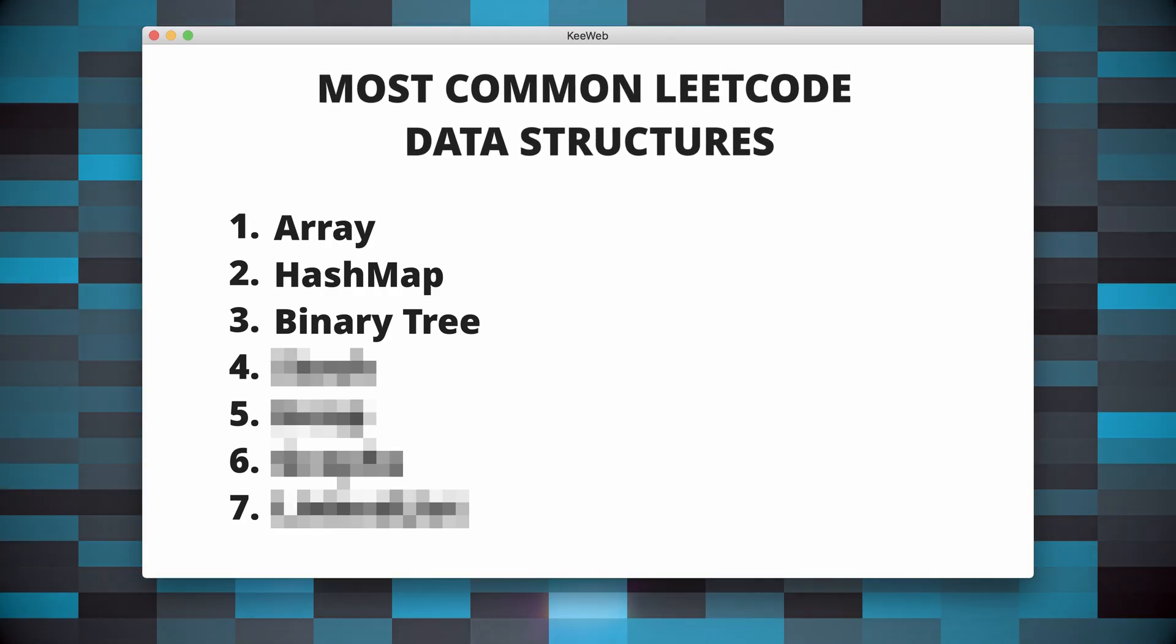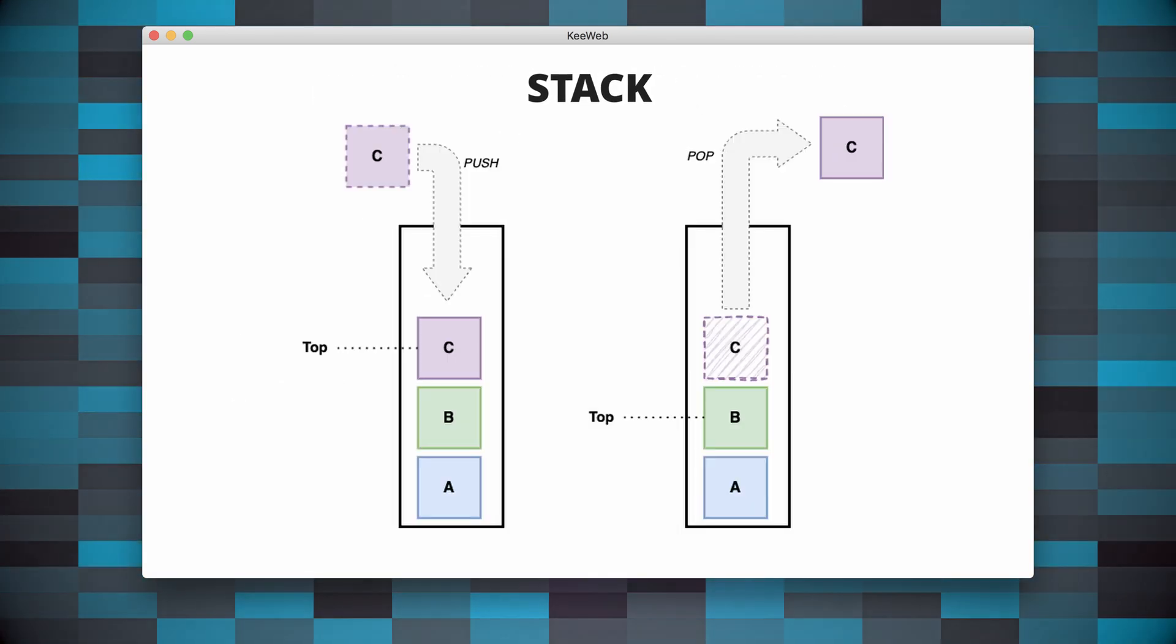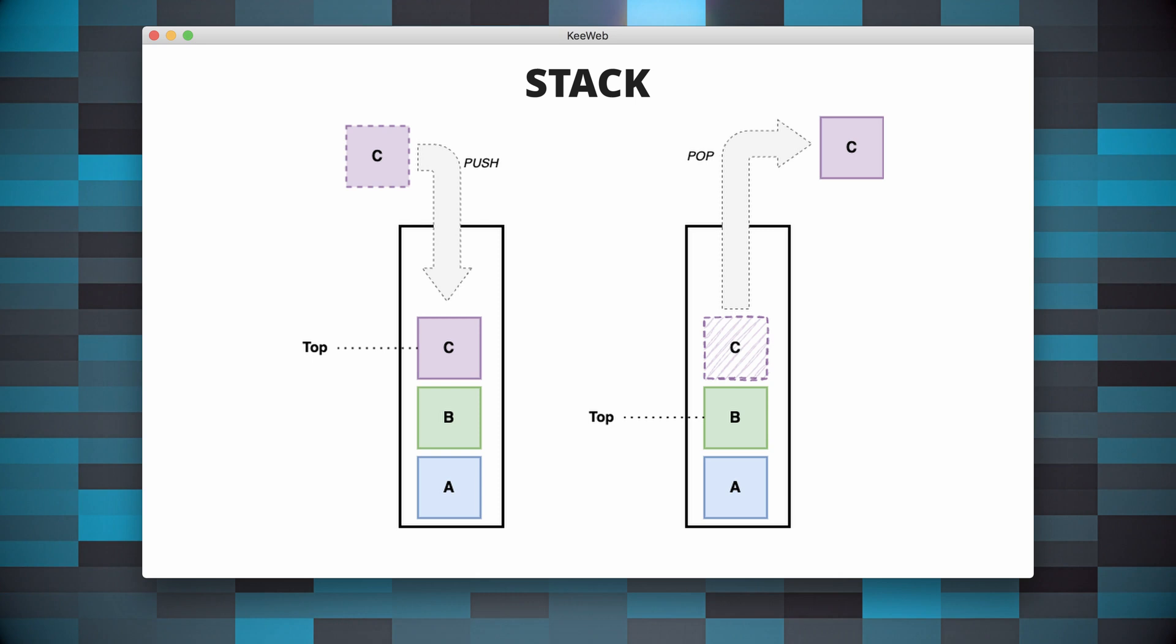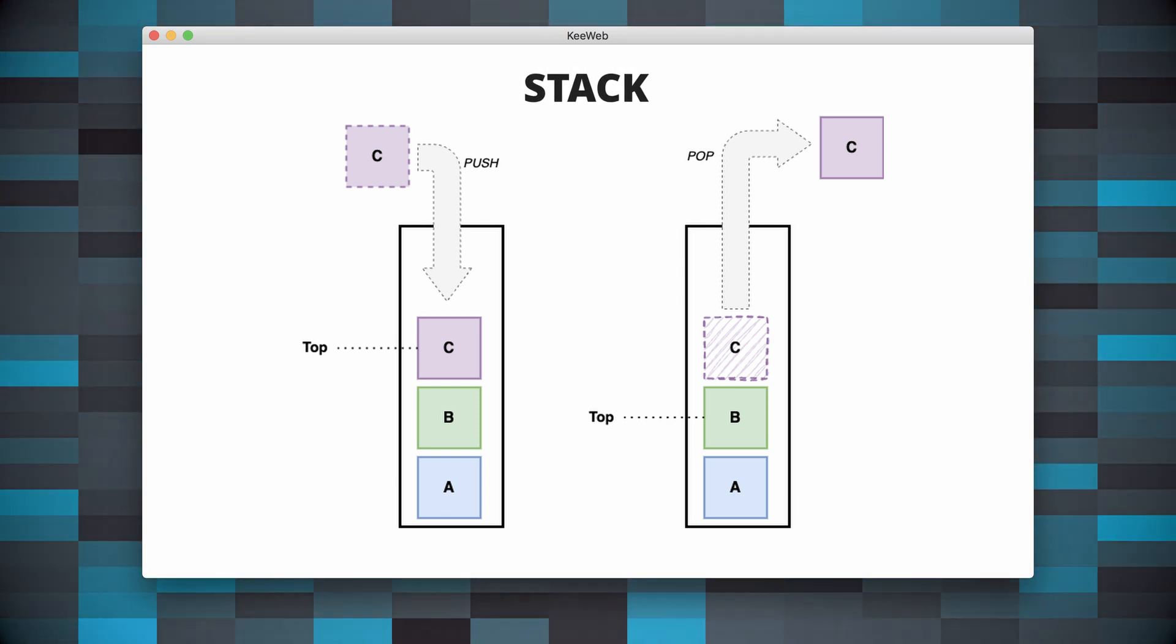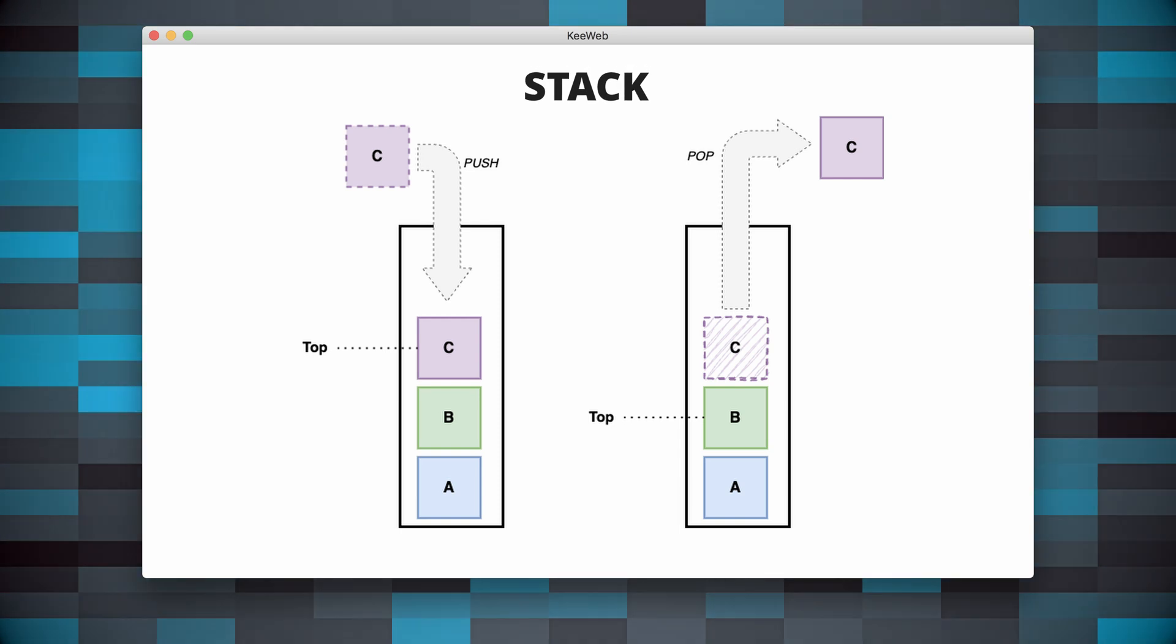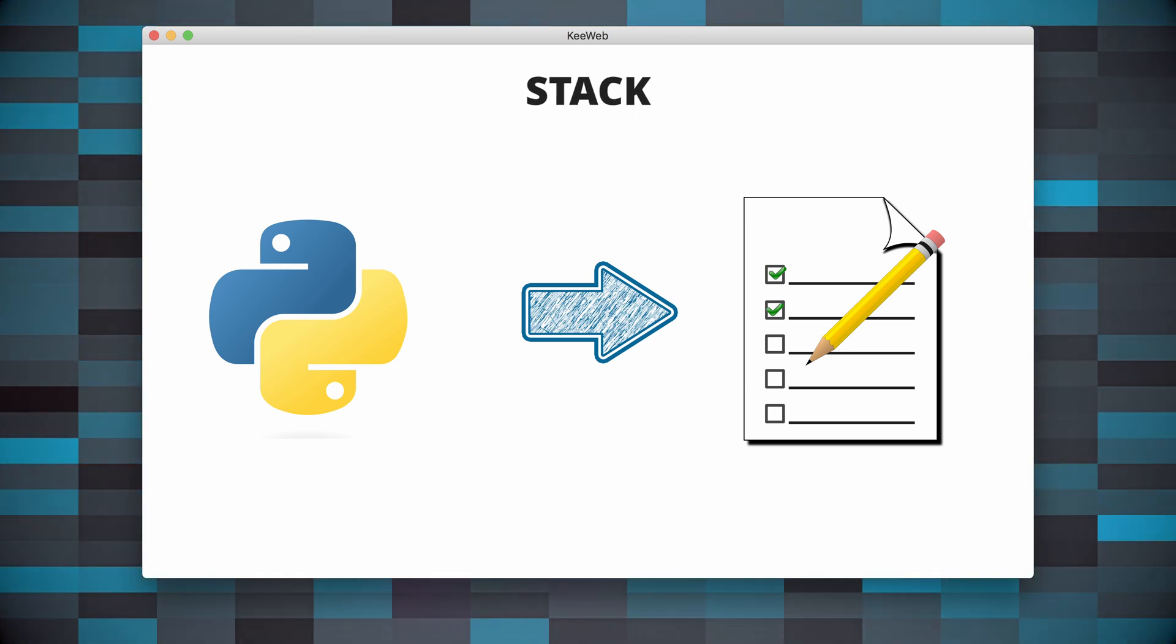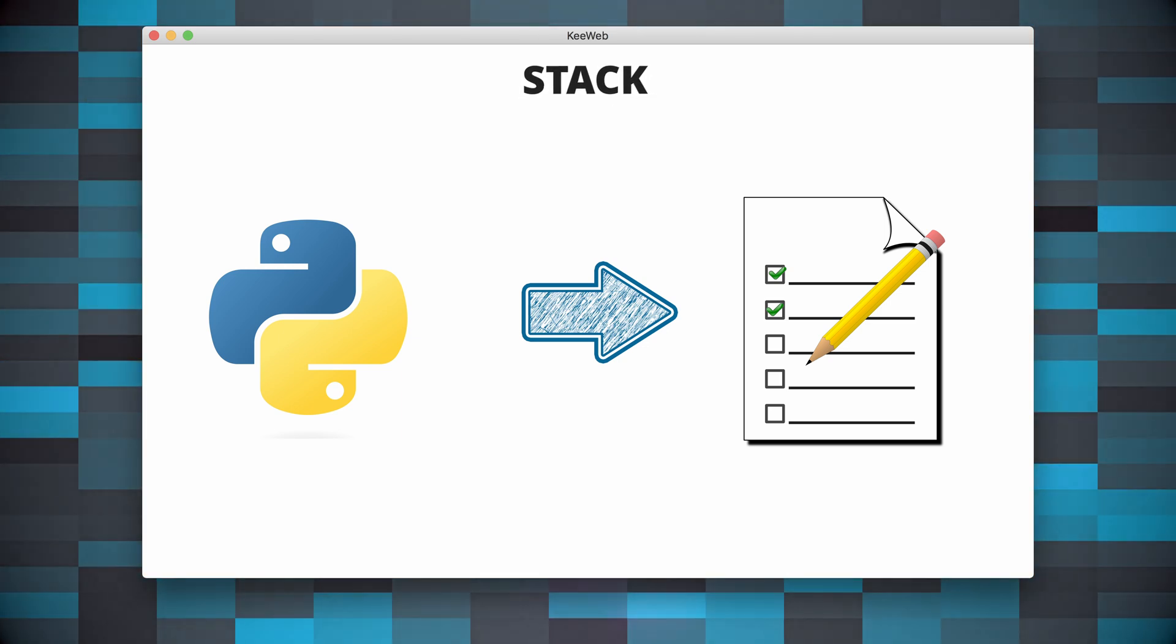The next data structure I want to talk about is Stack. A stack is a data structure that follows the LIFO principle: last in, first out, which means that the last element added to the stack is the first one to be removed. Python does not have a built-in stack data type, but we can easily implement one using a list. Here is an example.